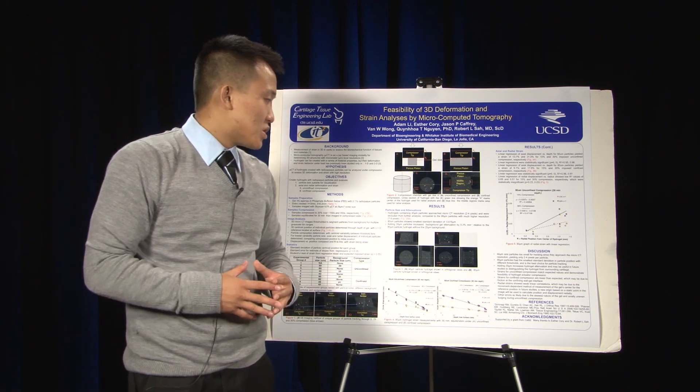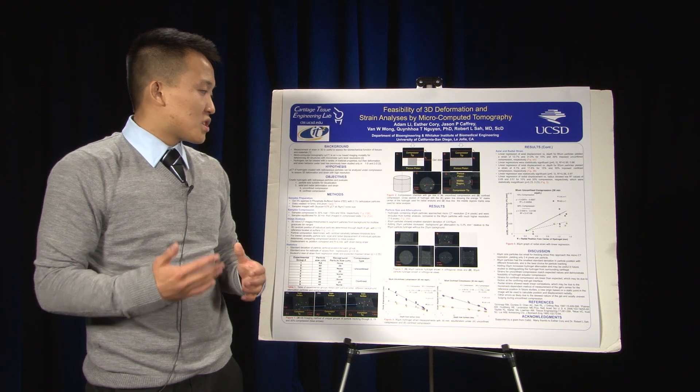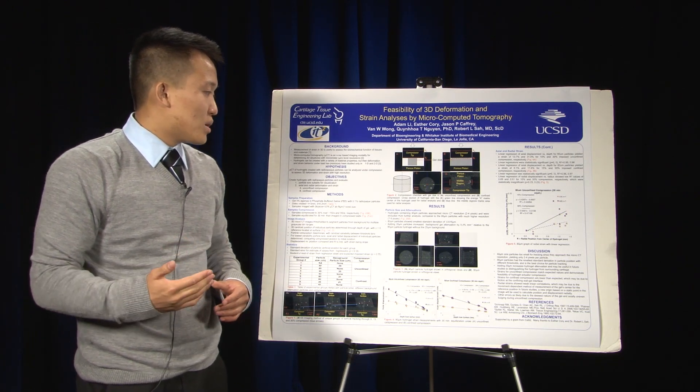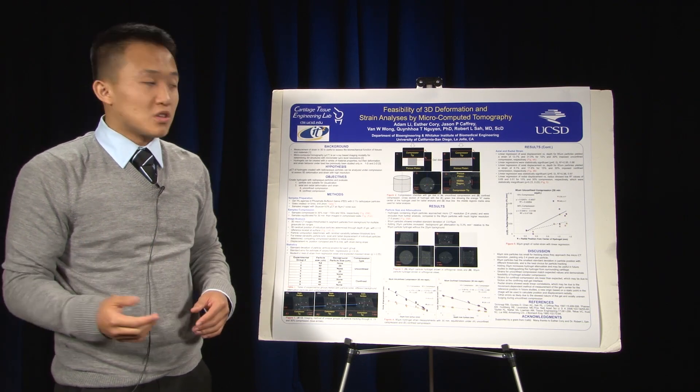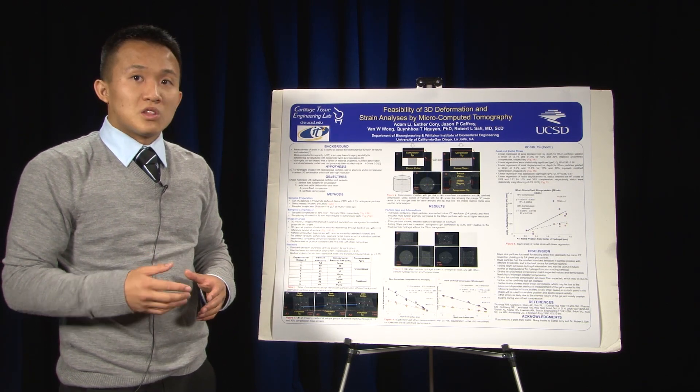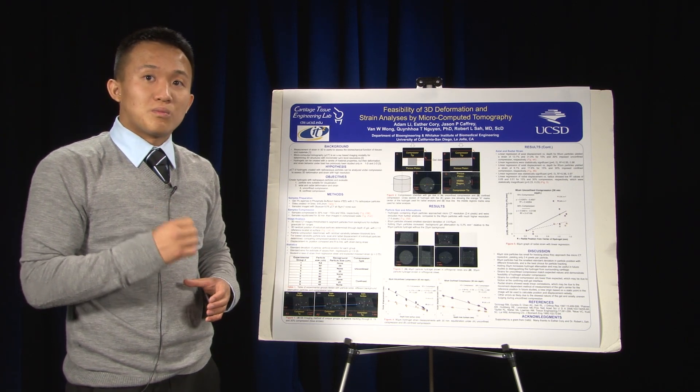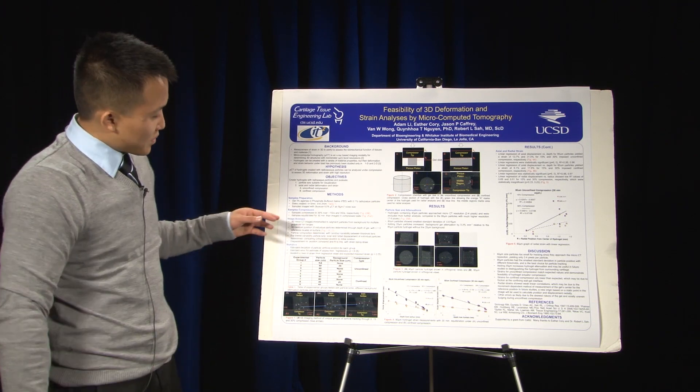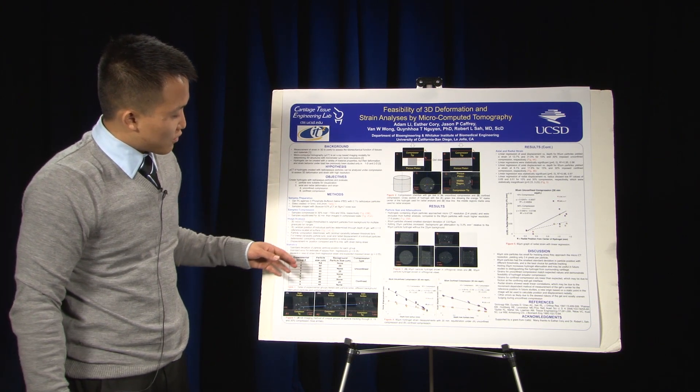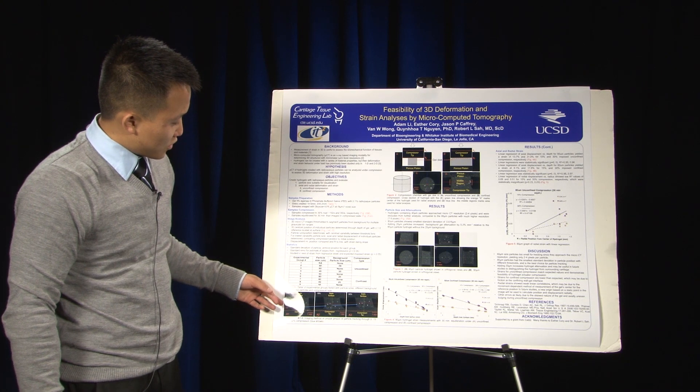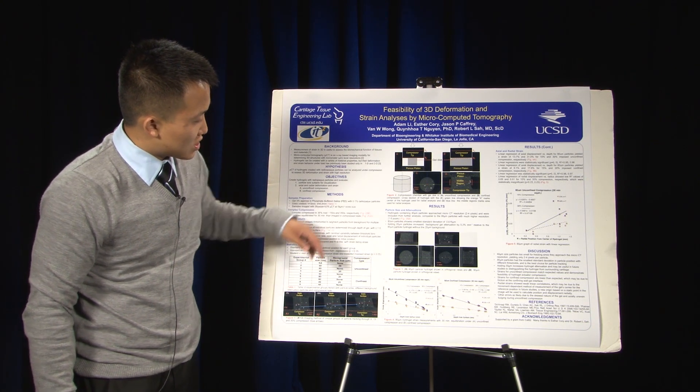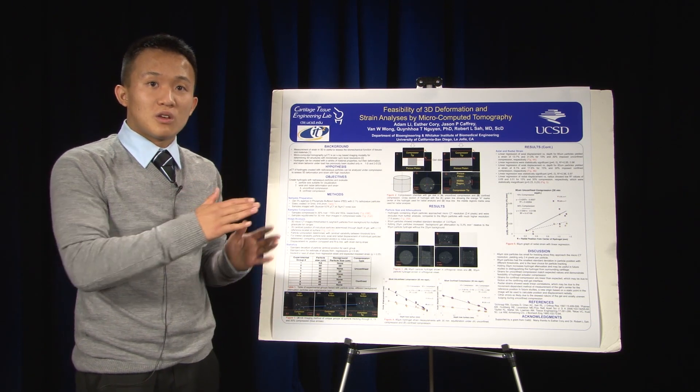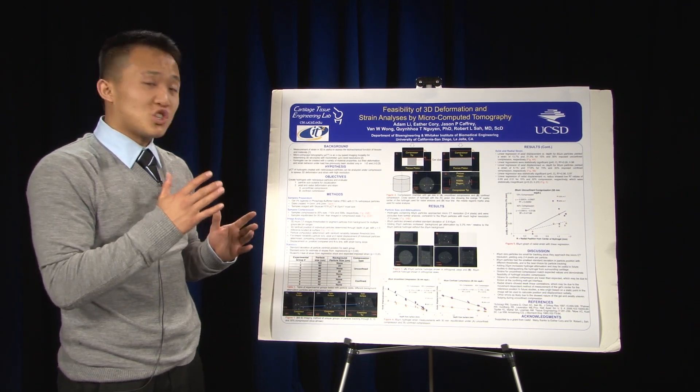The radial strains showed weak linear correlation, and this could have been due to a variety of reasons. One was that there's a movement-dependent method of measurement of the gel center. In other words, the gel center we used as a reference position, but it was moving throughout the compression, as we found in several examples. In Figure 1 and Figure 3, you can see in all the examples that the hydrogels have a slight skewed shape. Because of that, your center would be moving diagonally as you move throughout the hydrogel when you pick different particles to analyze.